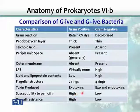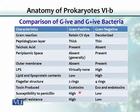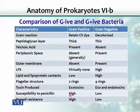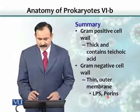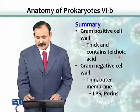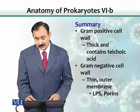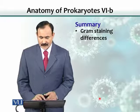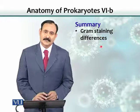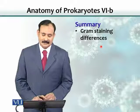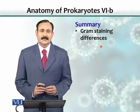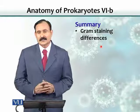Susceptibility to penicillin: gram-positive bacteria are very sensitive because they have a very thick cell wall that is disrupted by the antibiotic, while gram-negative bacteria are less affected because they lack a thick peptidoglycan layer. Overall, gram-positive bacteria are much more resistant to all kinds of antibiotics than gram-negative bacteria. In summary, gram-positive cell wall is thicker and contains teichoic acid, while gram-negative cell wall is thin but has an outer membrane and LPS. Gram-positive bacteria retain the crystal violet-iodine complex, while gram-negative bacteria cannot hold that complex when treated with alcohol as a decolorizer.